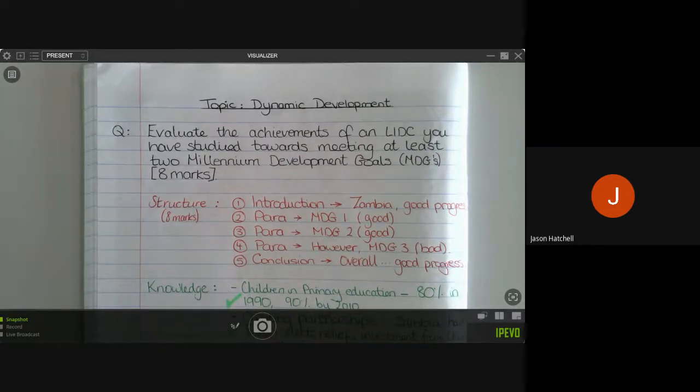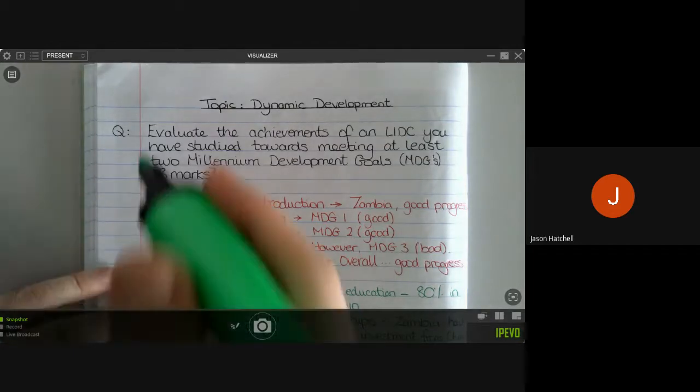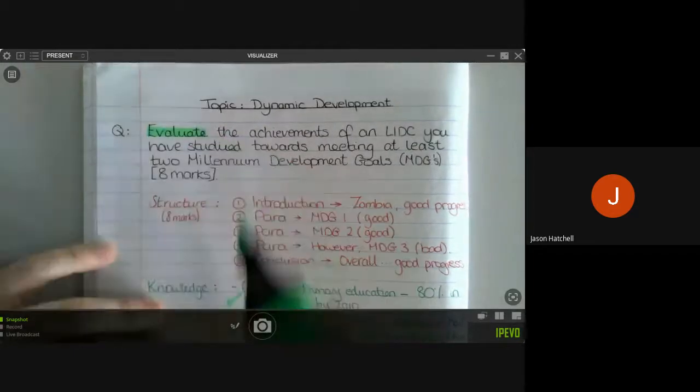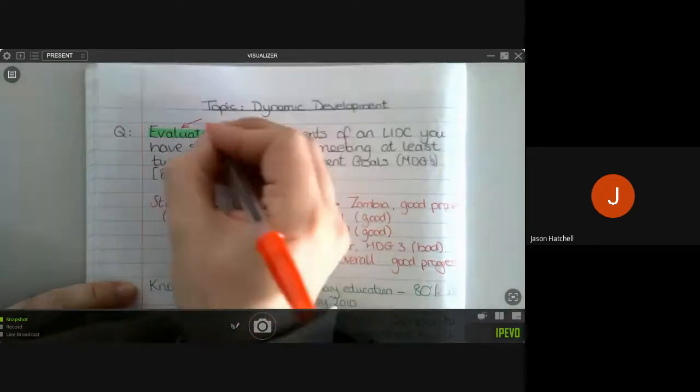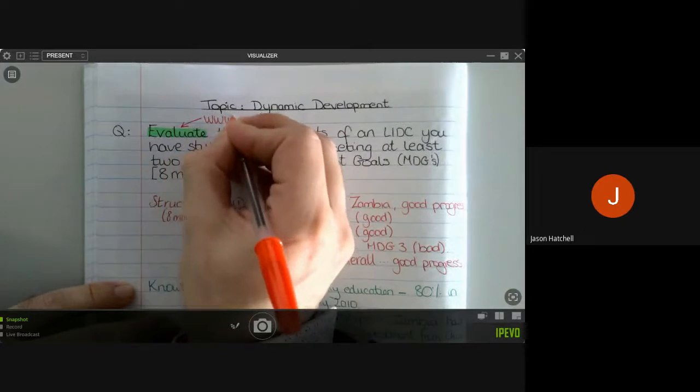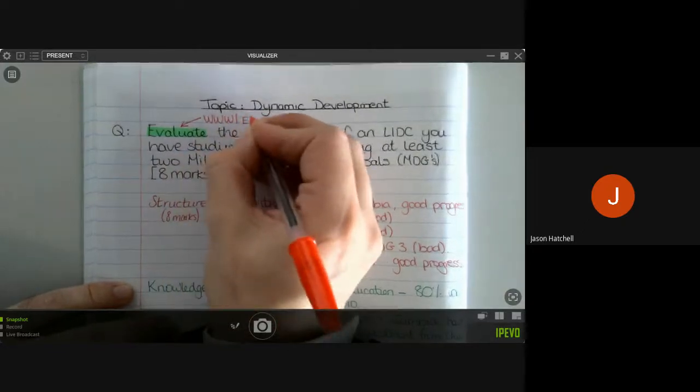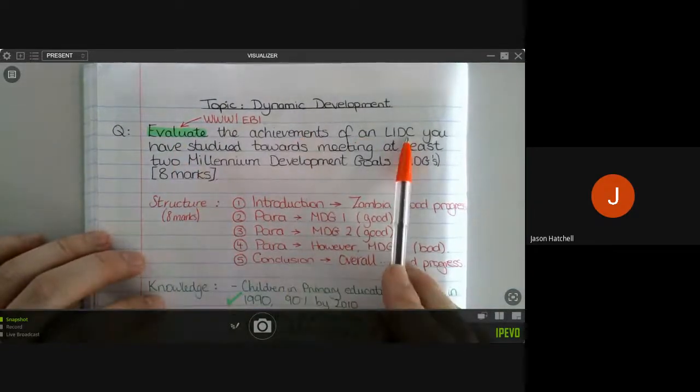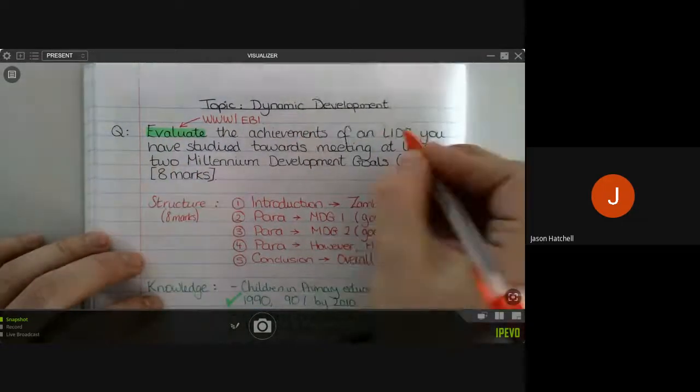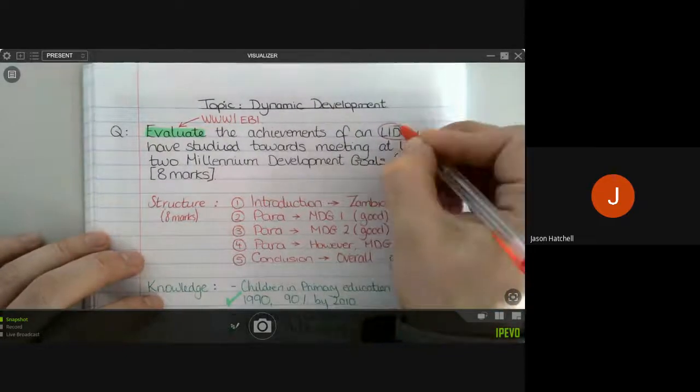So first of all, we need to figure out what the question is actually asking us, and the word evaluate should give you a big clue. When you see the word evaluate, you need to automatically think what was good, what went well, and what hasn't quite gone so well or what could be better. So we are asked here to look at the achievements of an LIDC, and of course that LIDC for us is Zambia.